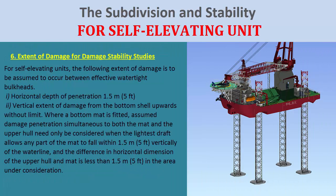Six: extent of damage for damage stability studies for self-elevating units. The following extent of damage is to be assumed to occur between effective watertight bulkheads: horizontal depth of penetration 1.5 meters (5 feet); vertical extent of damage from the bottom shell upwards without limit. Where the bottom mat is fitted, assumed damage penetration simultaneous to both the mat and the upper hull need only be considered when the lightest draft allows any part of the mat to fall within 1.5 meters (5 feet) and the difference in horizontal dimension of the upper hull and mat is less than 1.5 meters (5 feet) in the area under consideration.